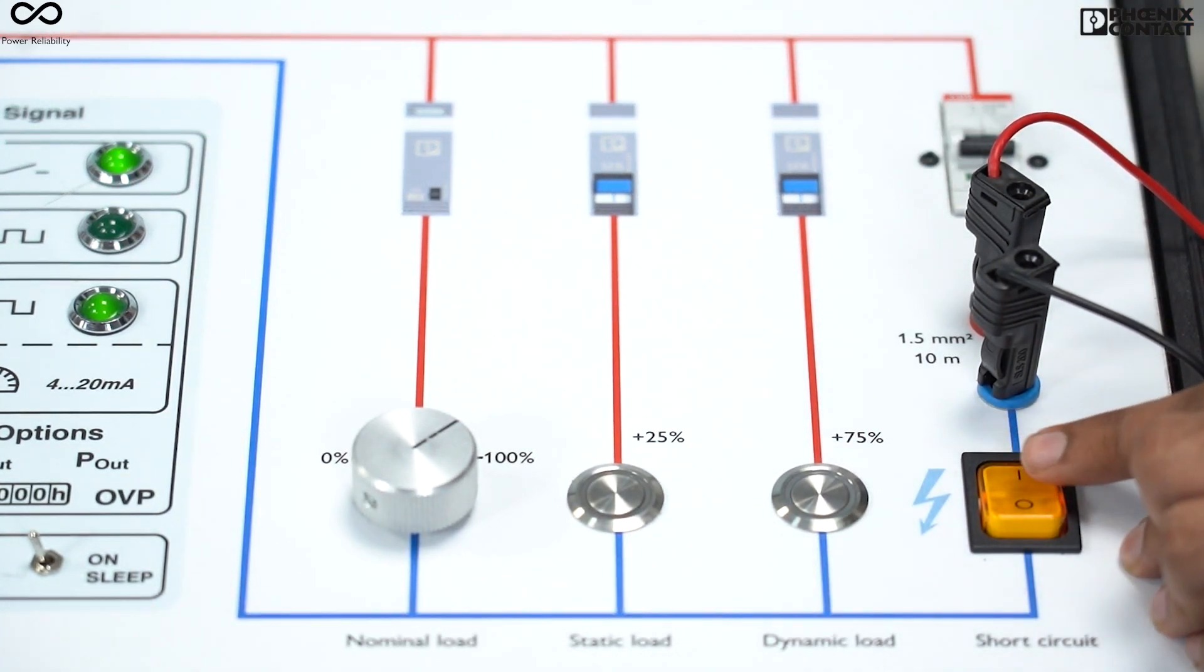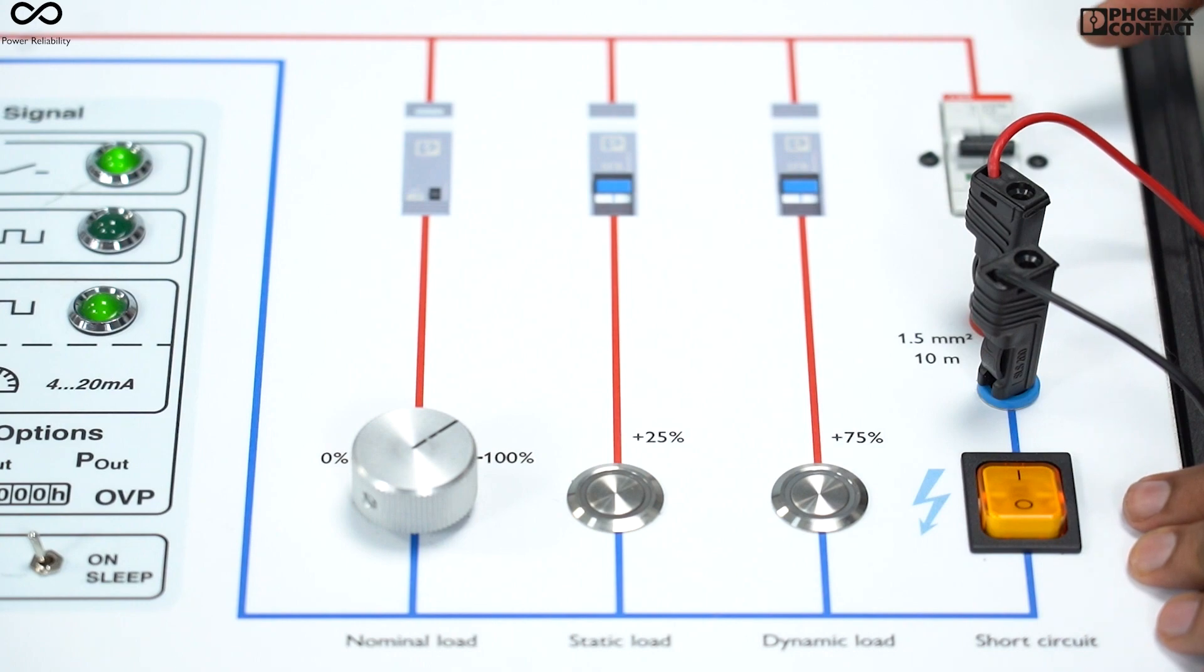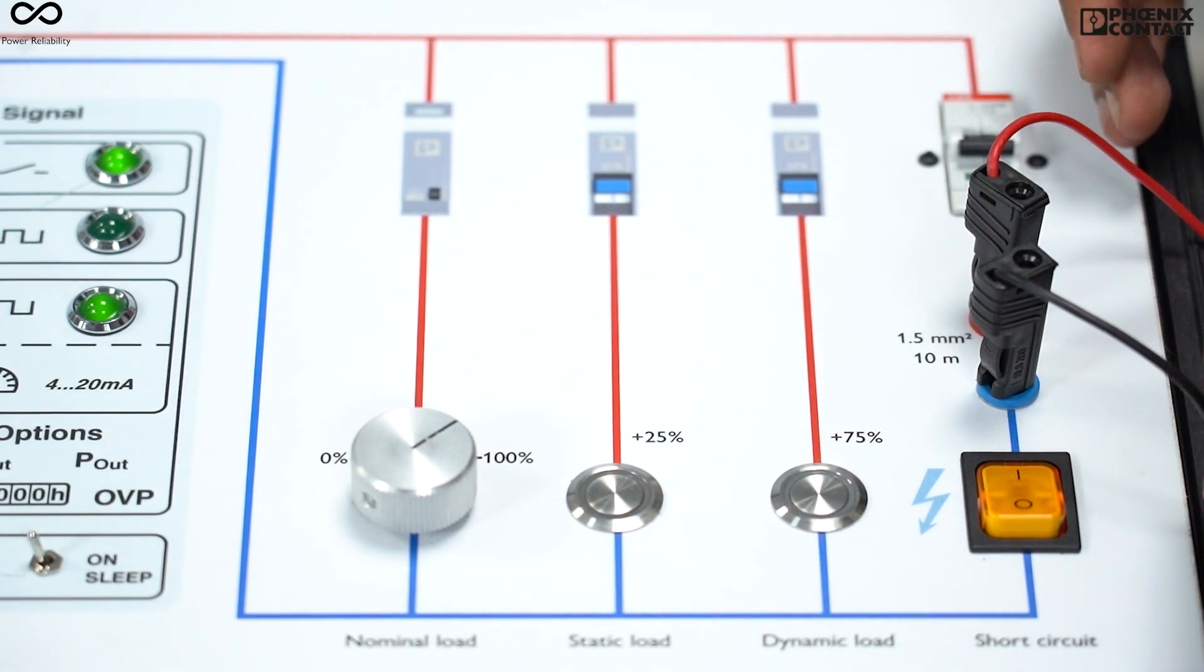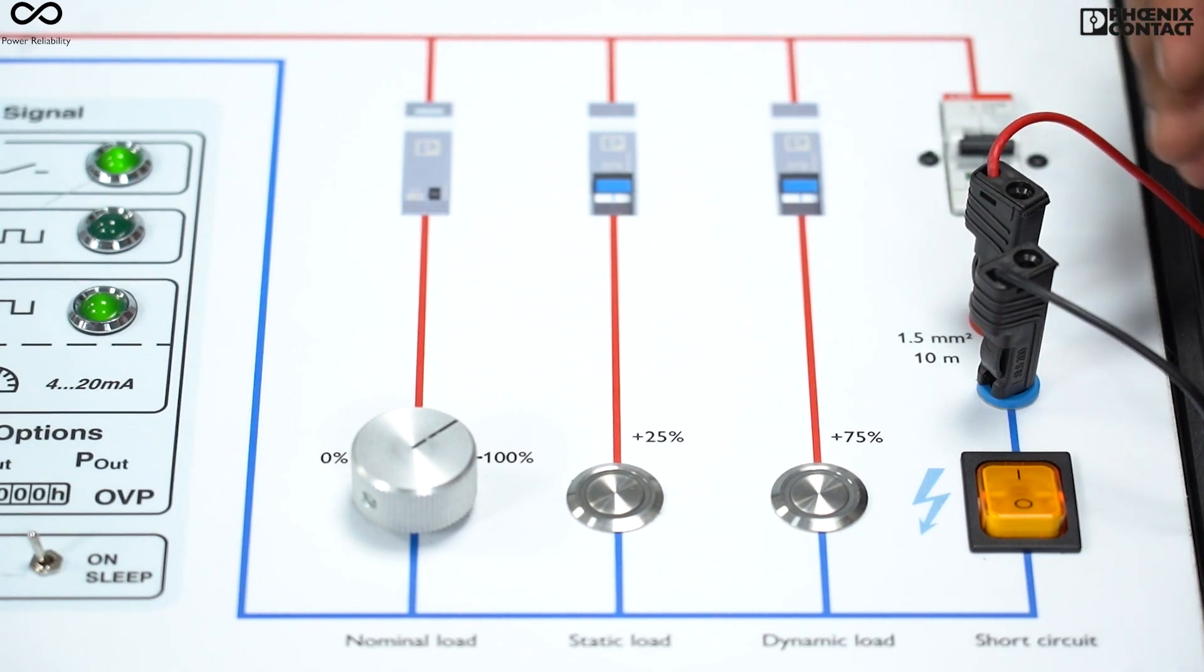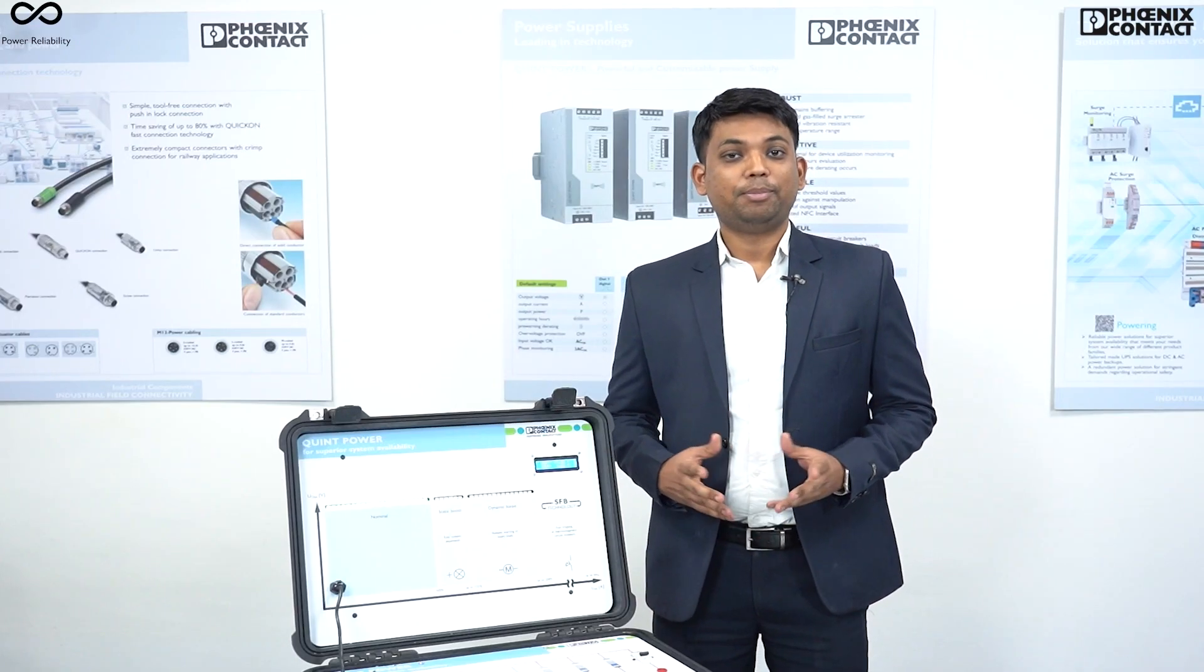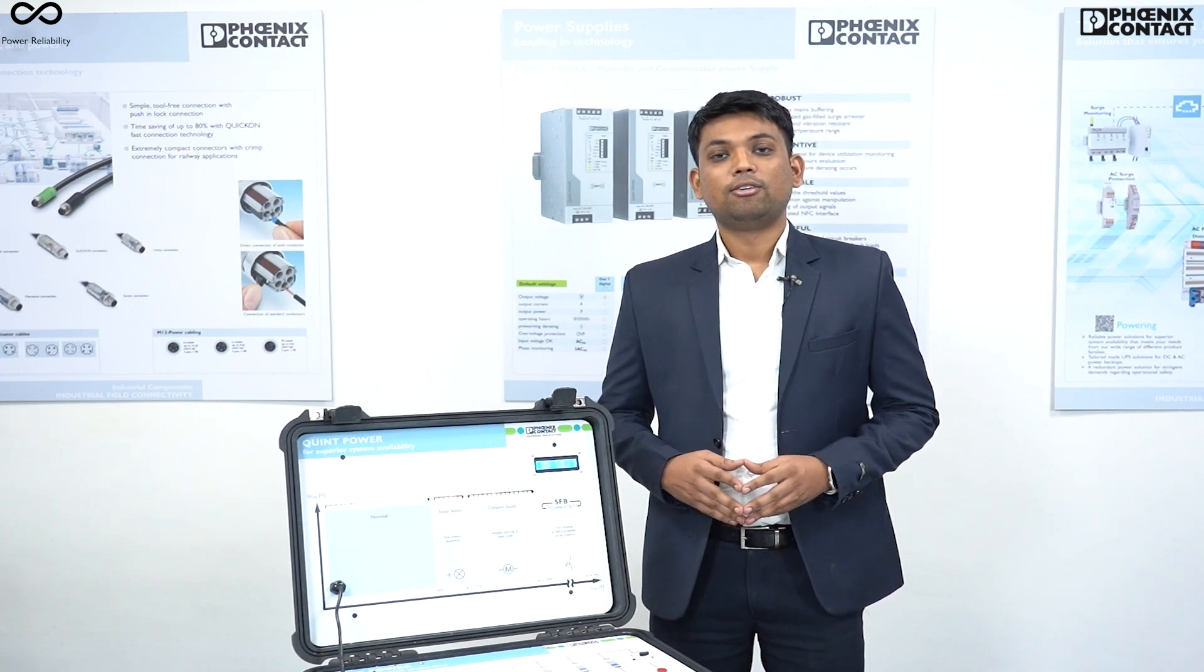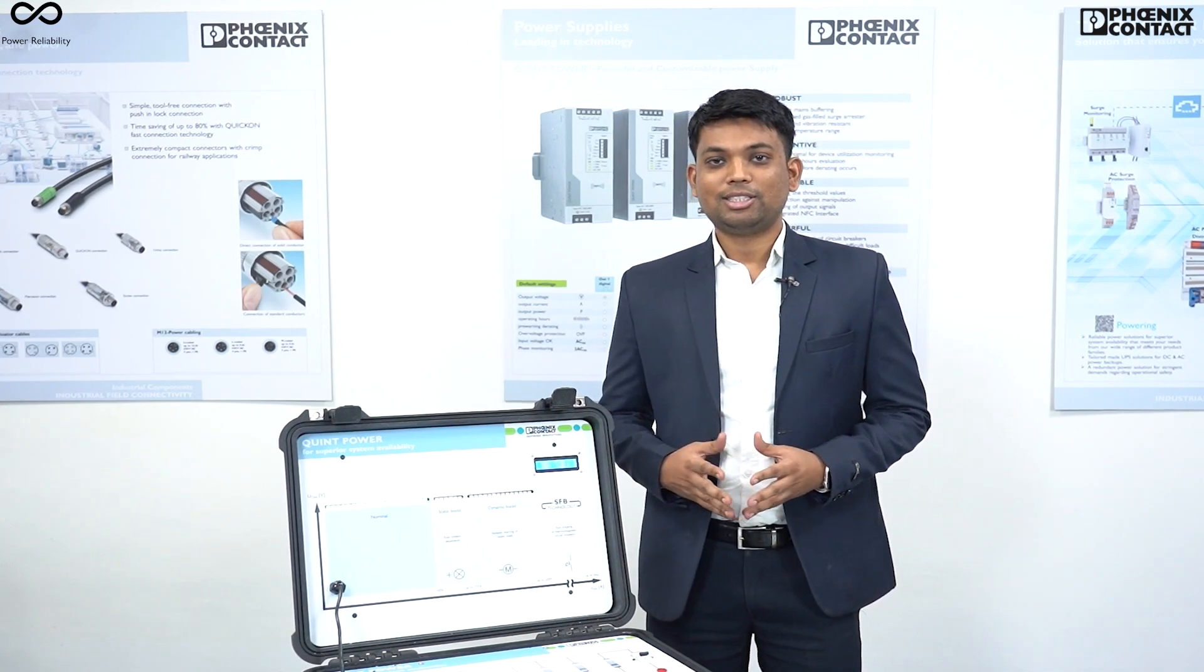So this circuit breaker will trip under 15 milliseconds, and the advantages of having SFB technology is even in your faulty condition, your faulty path will be isolated from the system and rest of the paths will continuously work. So this was a brief demonstration about Quint fourth generation power supply. For more relatable videos, stay connected with us and do visit our website. Thank you.